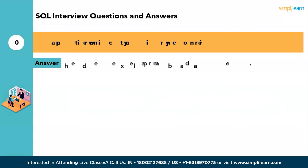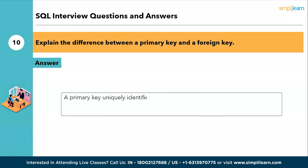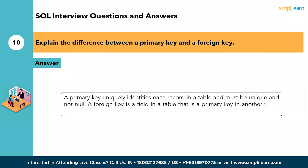The tenth question: explain the difference between a primary key and a foreign key. A primary key uniquely identifies each record in a table and must be unique and not null. A foreign key is a field in a table that is a primary key in another table, establishing a link between the two tables.